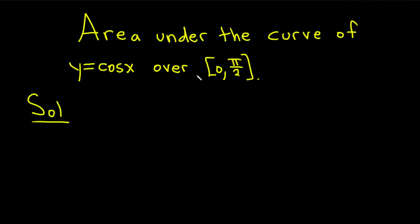So this area under this curve over the interval 0 to pi over 2 is given by this integral. We have the integral from 0 to pi over 2 of cosine x dx. And so if we integrate this we're going to get the area under the curve of y equals cosine x over this interval.